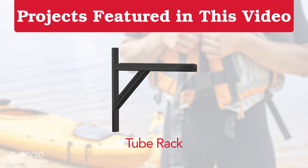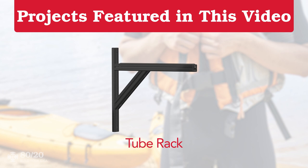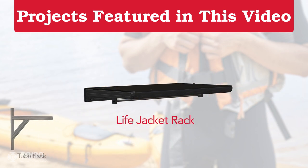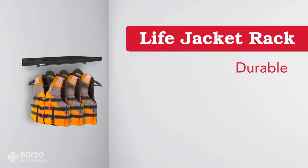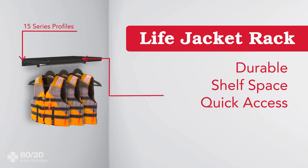Once we have the boating tubes organized, it's time to look at our first solution for life jacket organization. This wall-mounted life jacket rack is also built with durable aluminum profiles. The rack also has an ABS hair cell panel on top to provide extra shelf space.